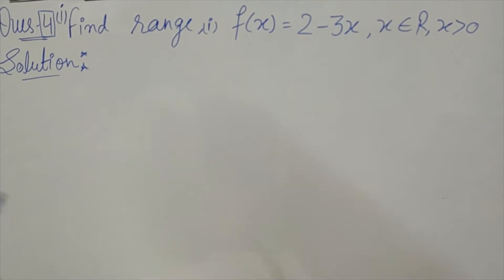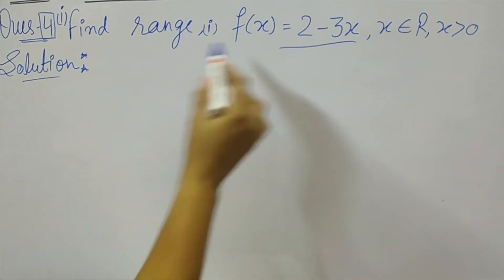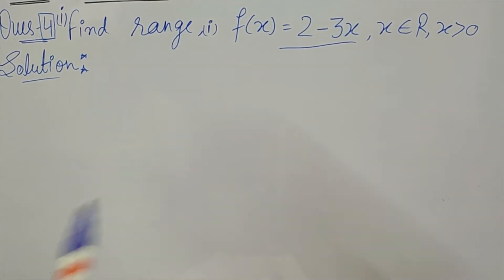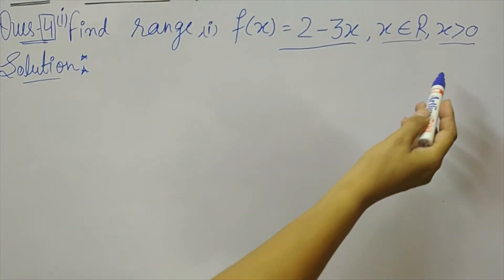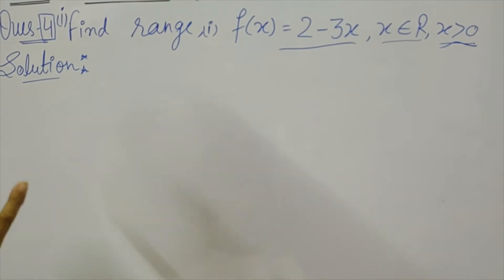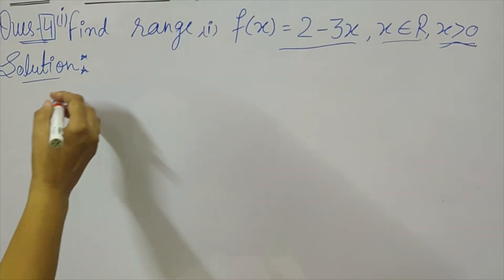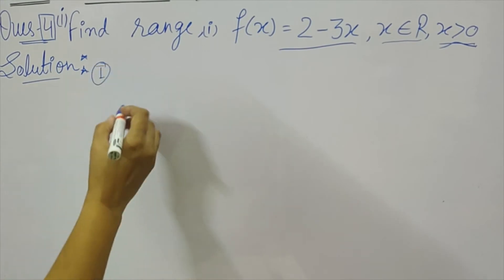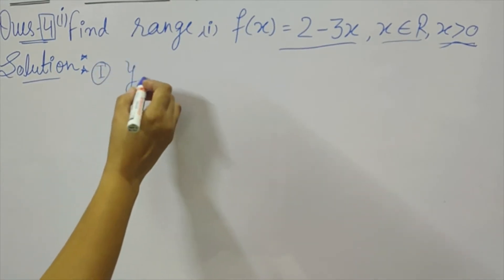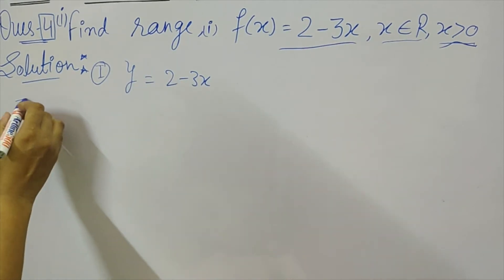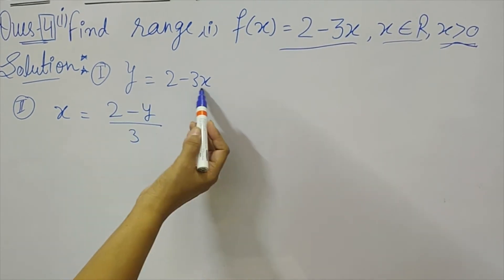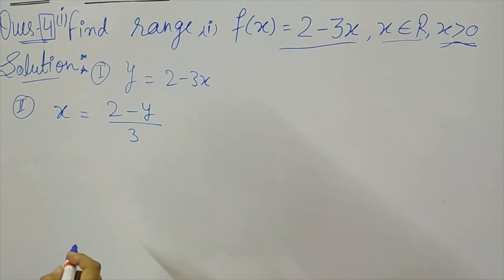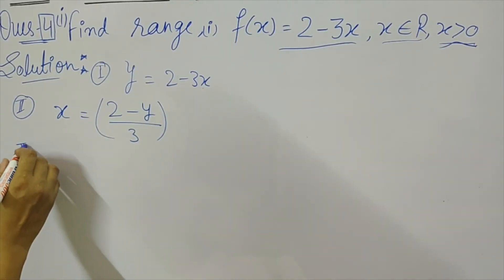Now question 5, first part: find the range. The function is f(x) = 2 − 3x, with x a real number and x > 0, so positive real numbers only — zero is not included. We need to find the range, meaning all possible values of y. Using the routine method: set y = 2 − 3x, then solve for x to get x = (2 − y)/3.